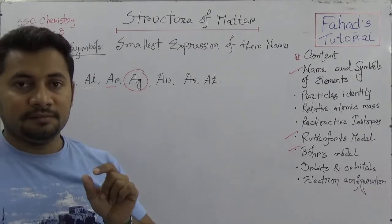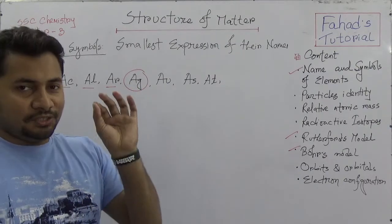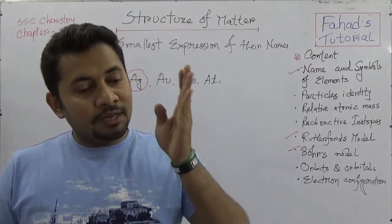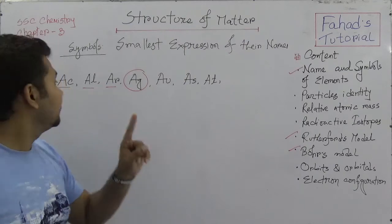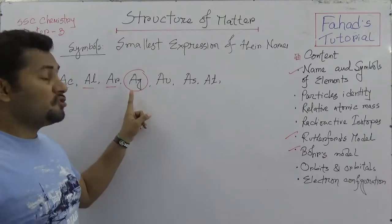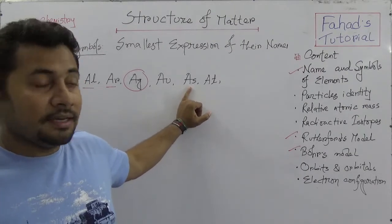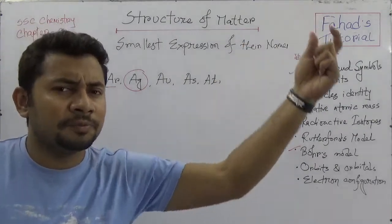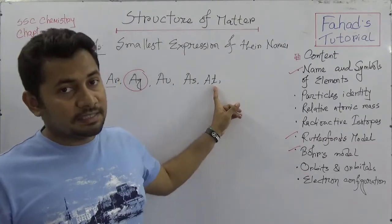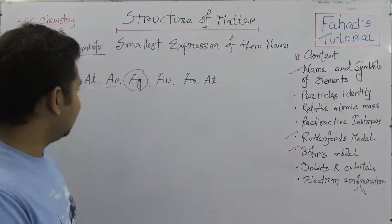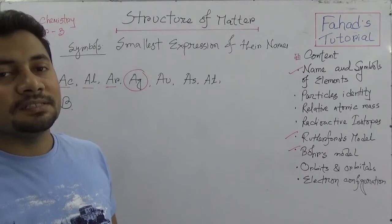A single capital letter 'B' expresses the element boron. Then 'BA' stands for barium, 'BE' stands for beryllium, 'BI' stands for bismuth, 'BK' stands for berkelium, and 'BR' stands for bromine.